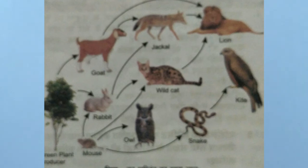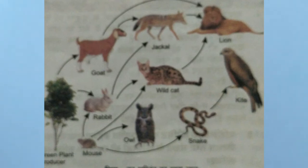Food chain (khadijal) — food web of a forest ecosystem (van paritantra ka khadijal). The food web of the forest ecosystem is an important diagram to practise.